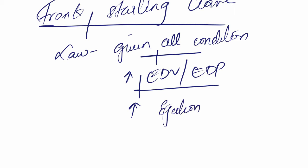That's what Frank-Starling law states. Given all the other conditions like heart rate and peripheral vascular resistance are the same, if you were to increase the end diastolic volume or the end diastolic pressure, both are the same, we'll have an increase in stroke volume. That's what he said.